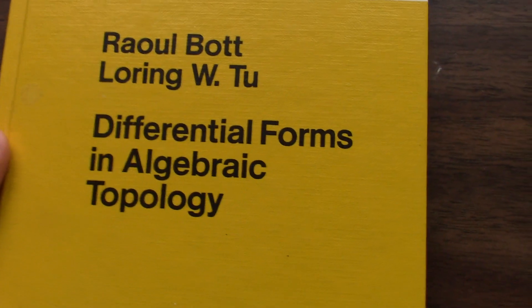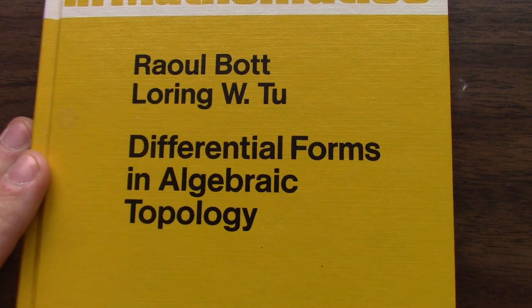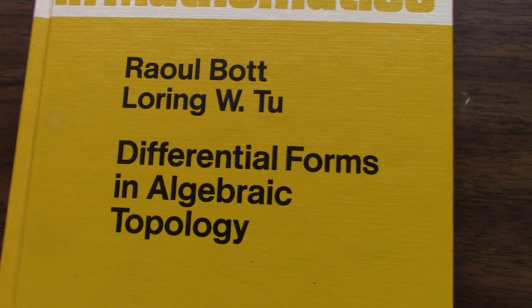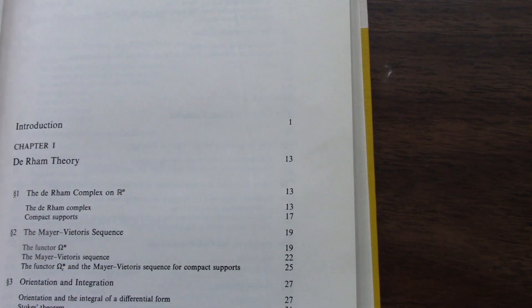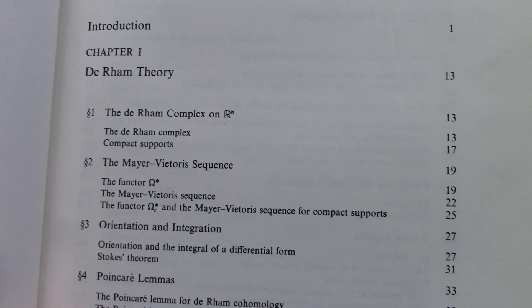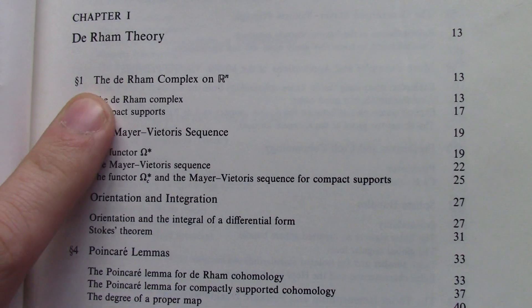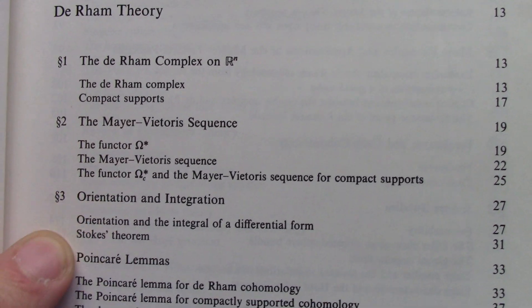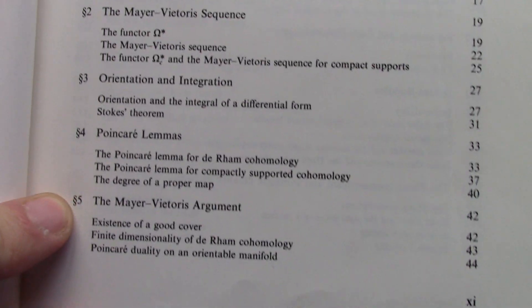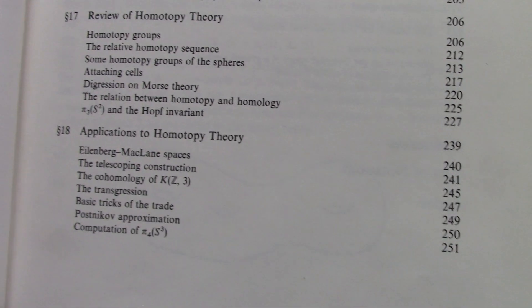But now let's move on to an absolute classic. If you care about algebraic topology and/or differential geometry, this is a book you need to read: Bott and Tu's Differential Forms and Algebraic Topology. Awesome book. This is something I've definitely used to learn from. I've not read it cover to cover, but it's a great introduction to de Rham theory, de Rham cohomology, and differential forms.